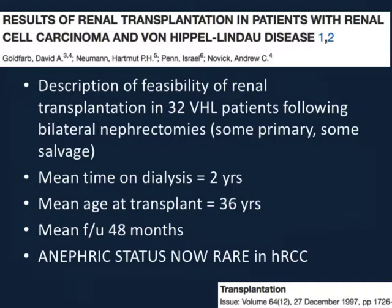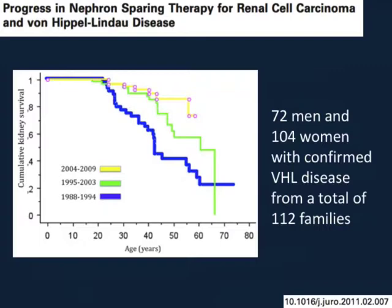Renal survival over time based on eras of management shows that in the most recent era — 2004 to 2009 — patients are able to stay with their own native kidneys over their lifetime, having two or three or four renal ablations. While stage migration and earlier detection are considerations, in the hereditary population these patients have been screened with ultrasound since the 1990s, so the effect of stage migration is less pronounced than in sporadic forms. The technological advances in nephron-sparing approaches and percutaneous ablation have been a large milestone in treatment.